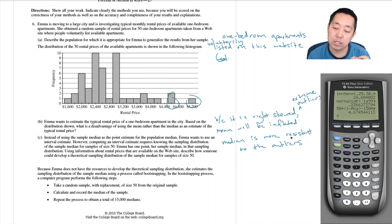Instead of using the sample median as a point estimate for the population median, Emma wants to use an interval estimate. However, computing an interval estimate requires knowing the sampling distribution of the sample median. Using information about rental prices that are available on the website, describe how someone could develop a theoretical sampling distribution of the sample median for sample sizes of 50.